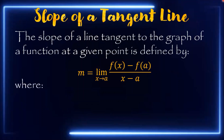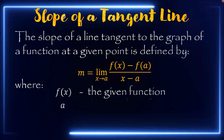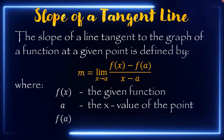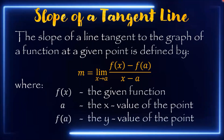Where f(x) is the given function, a is the x-value of the given point, and f(a) is the y-value of the given point. Now let's apply this formula in solving for the slope of a tangent line in the following examples.